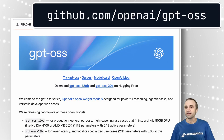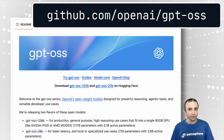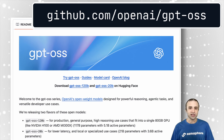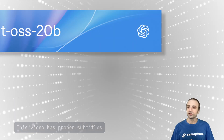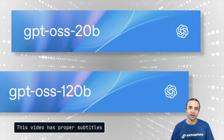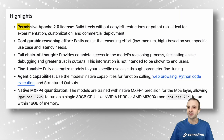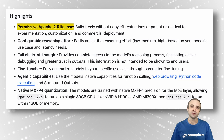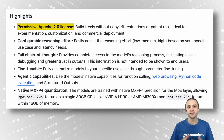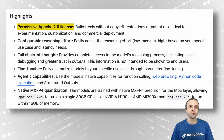This is huge. OpenAI has released two new open-source models, and these are proper large language models with 20 and 120 billion parameters. They're Apache 2 licensed, and that means you can run it, distribute it, fine-tune it, and even build things on top of them.